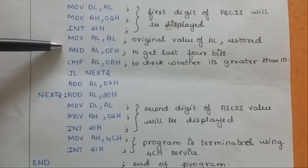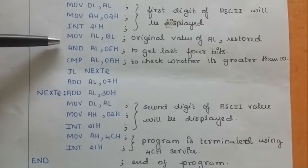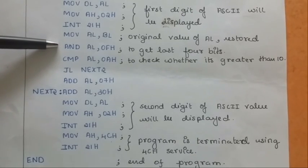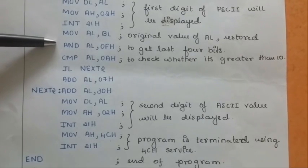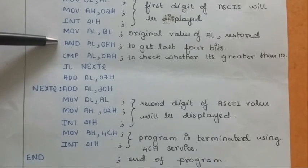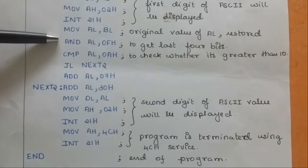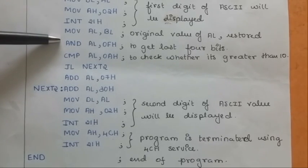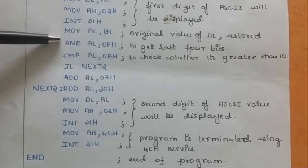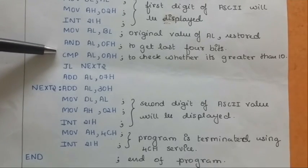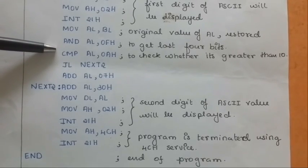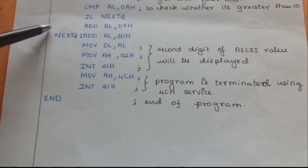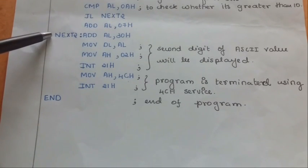From the ASCII, we have to get the second digit now. So, we have to AND al with 0fh. After doing so, we get the second digit. That is in our example, 34h is a value stored in al. When we AND 34h with 0fh, we get 04h. Now, this 04h is compared with 10 according to the rule of ASCII. If the number is less than 10, it will go to the label next2 and 30h will be added to it.